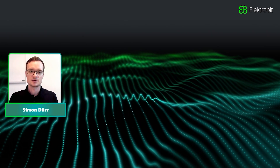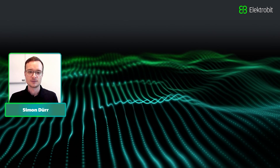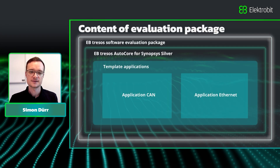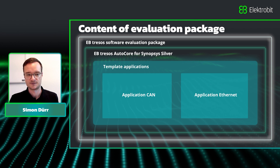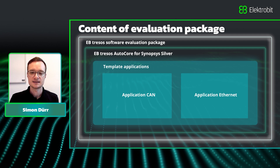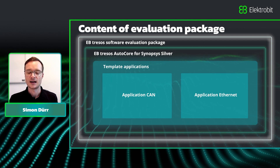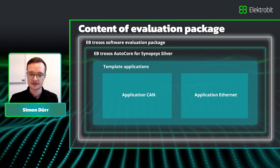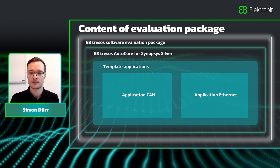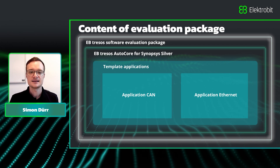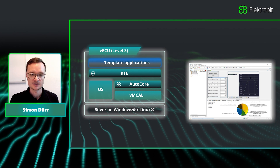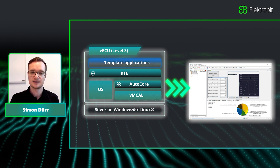Hello everyone and welcome to this tutorial. My name is Simon Doerr and today I will show you how to use the EB Tracers AutoCore or Synopsys Silver evaluation package. This evaluation package includes EB Tracers AutoCore, which includes two template projects called application Ethernet and application CAN. The template applications contain a broad set of basic software modules and application software components. With our Synopsys Silver integration you can execute and debug them directly on your PC.